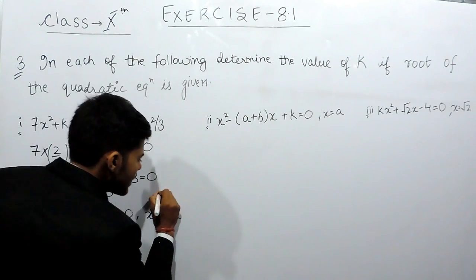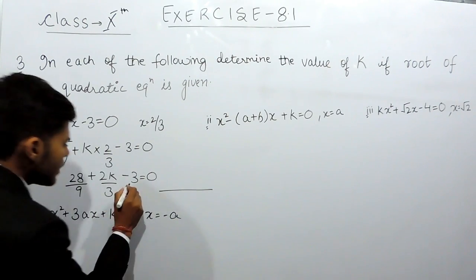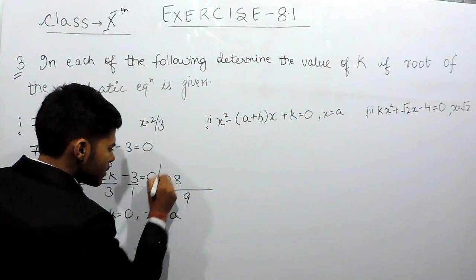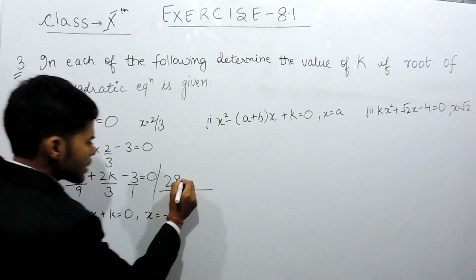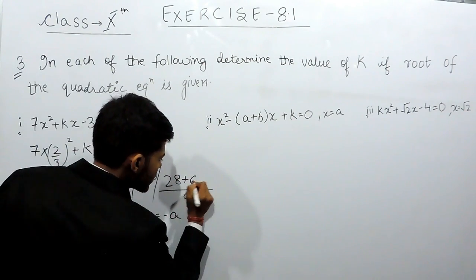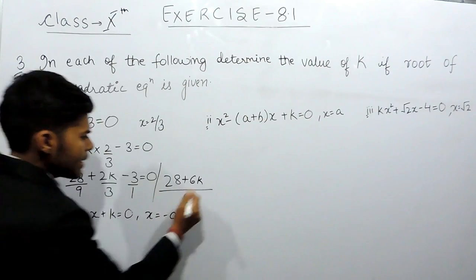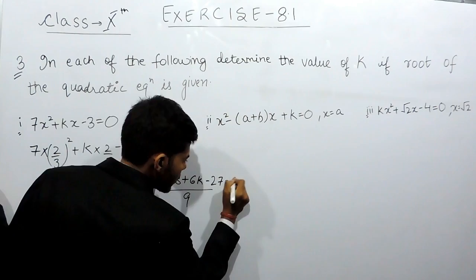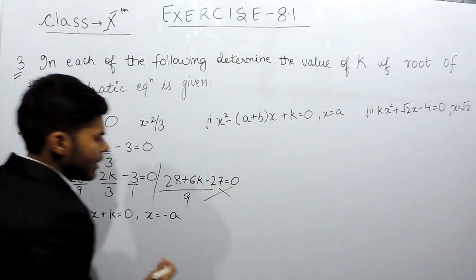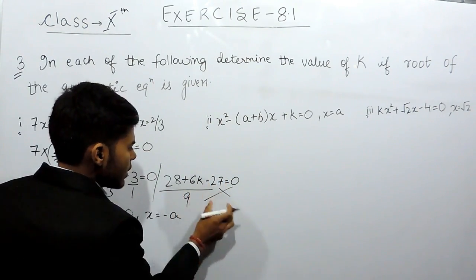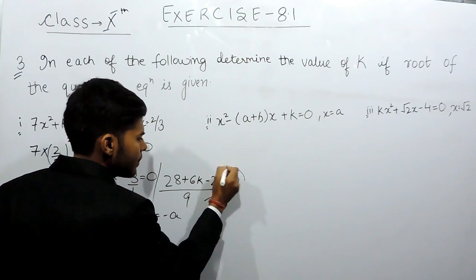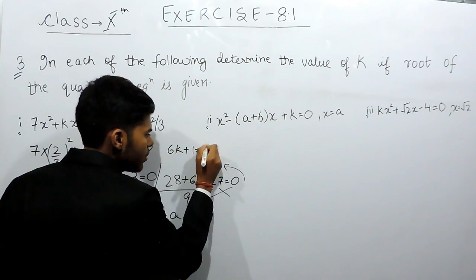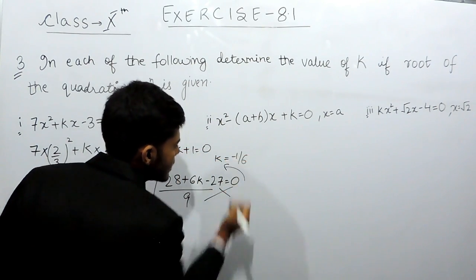Then we will take the LCM. The LCM will come out to be 9, that will be equals to 28 plus 6k minus 27 equals to 0. We will cross multiply them. This will be equals to 6k plus 1 equals to 0, and k will be equals to minus 1 by 6.